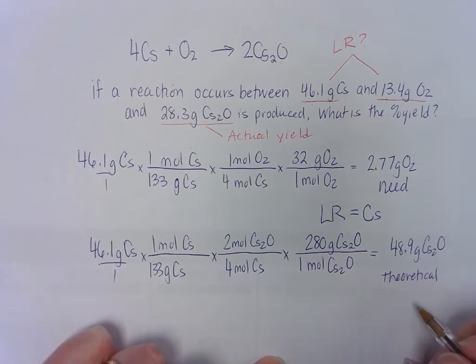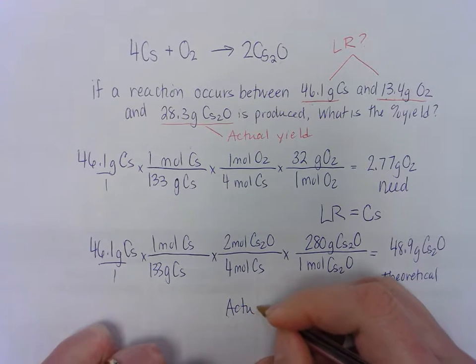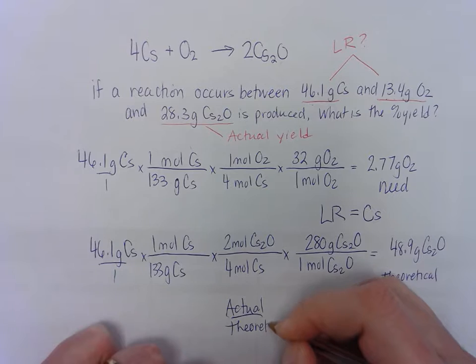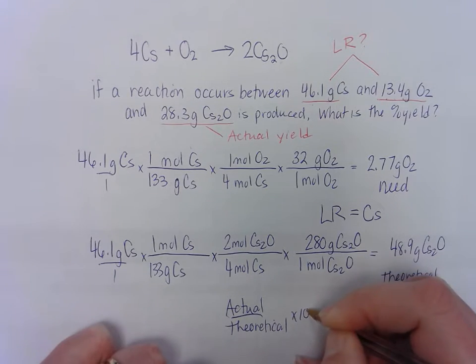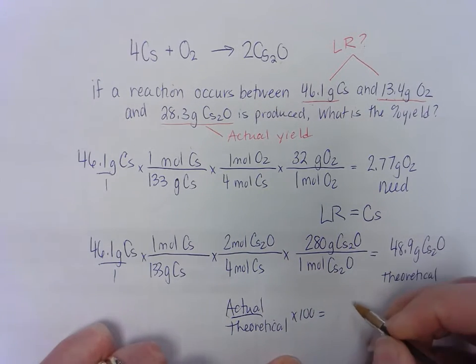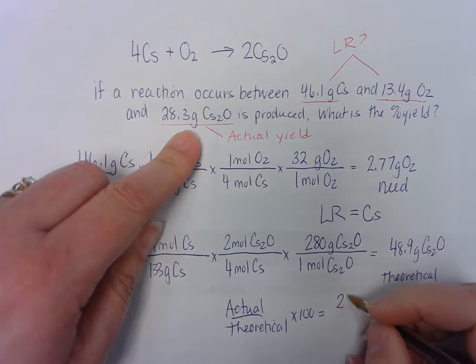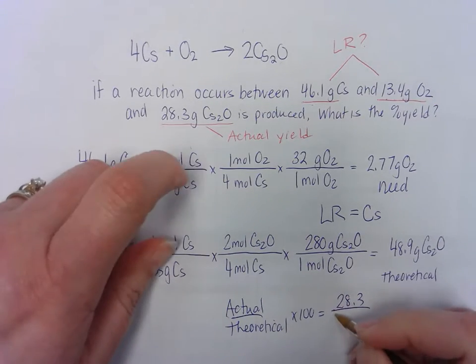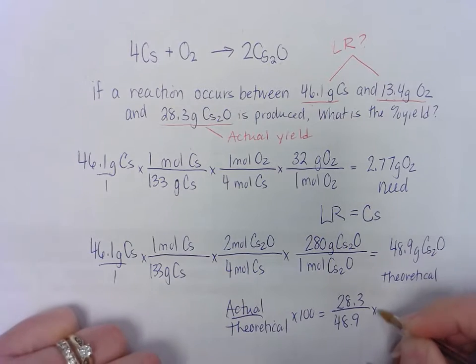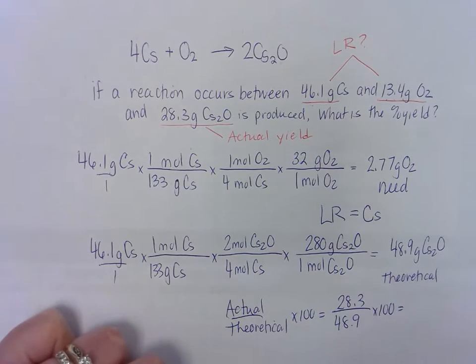So to find your percent yield, you're going to take the actual divided by the theoretical times 100. And that will give you your percent. So we'll take the actual provided in the problem divided by the number that we just found times 100.